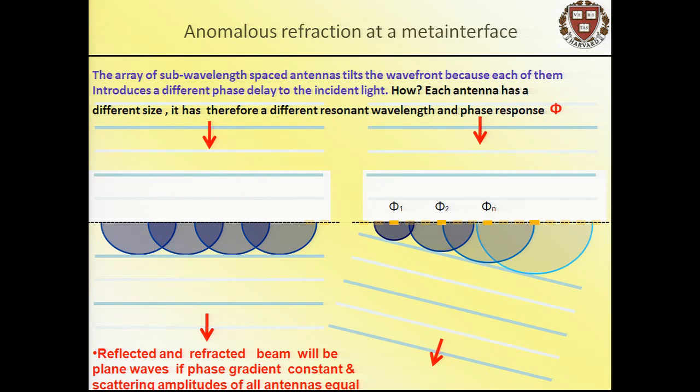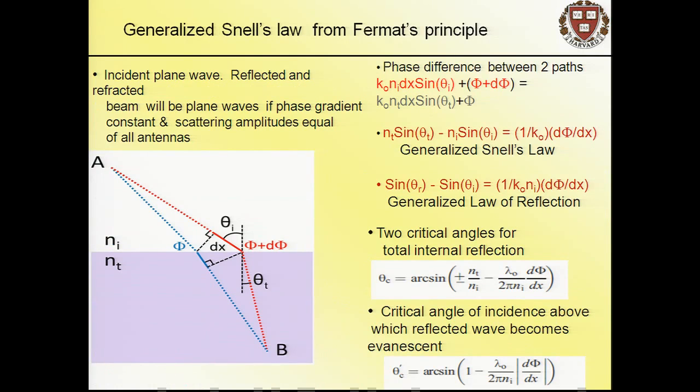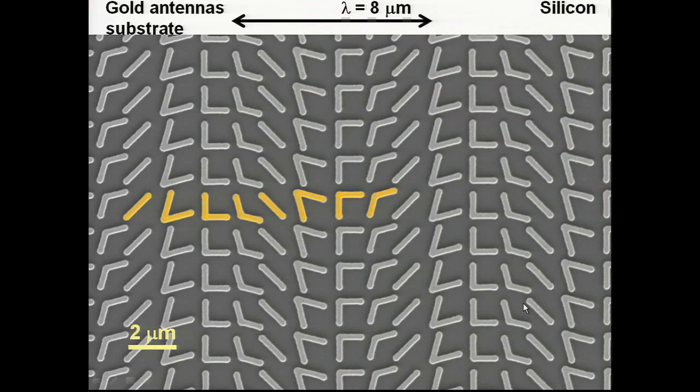Now suppose you engineer the surface with optical antennas that scatter light with a certain phase shift between scattered and incident light. You can design the phase response—one antenna has a different phase shift than another. The phase shift controls the wavefront, and you can tilt it. If you engineer the phase response to be linear with distance—constant phase gradient—you transform a plane wave into a plane wave. We call this anomalous refraction. For a phased surface with constant phase gradient and equal scattering amplitude for each antenna, you get a beautiful generalization of Snell's law. If this term equals zero, it's just the ordinary Snell law. If you have phase variation, you can apply Fermat's principle to find the path of stationary phase—this is a new law of reflection. The same applies for reflection: angles of reflection and refraction won't be equal anymore, and you can get new critical angles.